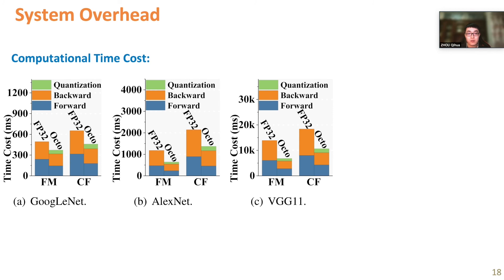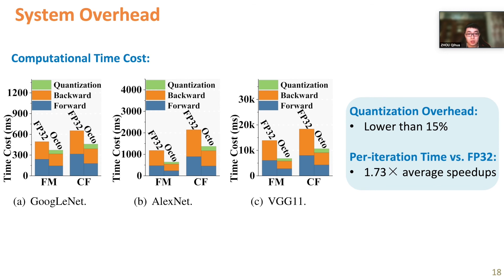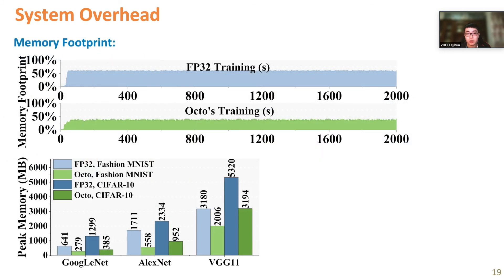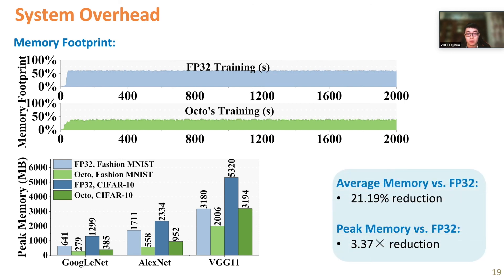We measure the average computational time cost of different stages in each iteration. Although OCTO introduces actual overhead from data quantization—about 15% increase on average—it still reduces the completion time of both forward and backward passes, holding a shorter per-iteration time. We also monitor real-time memory footprint: due to int8 parameters and gradient quantization, OCTO effectively reduces both average and peak memory usage, making it possible to deploy VGG-like models.